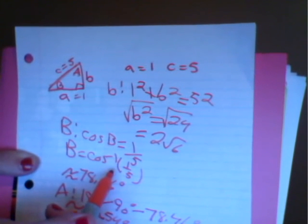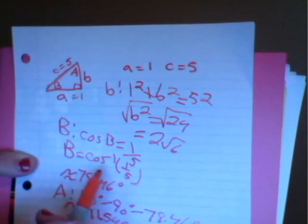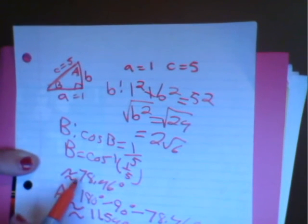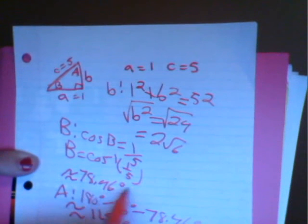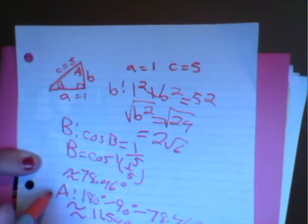1 over 5 is in the domain of inverse cosine, which is negative 1 to 1. This equals 78.46 degrees.